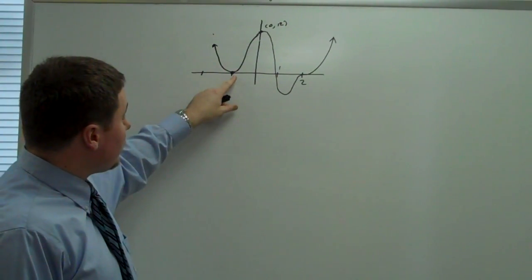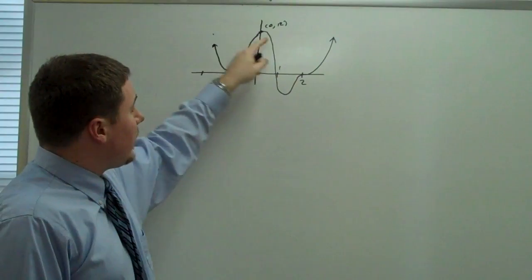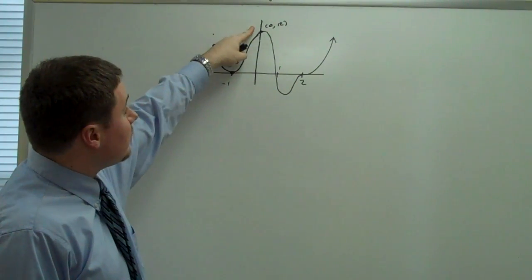Know that it goes through negative 1, 1, and 2, and also has a y-intercept of 12.